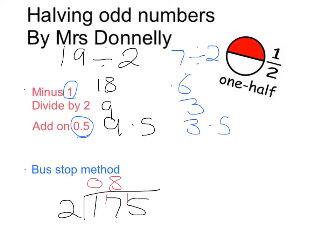and 1 left over. How many 2's go into 15? 7 times 2 is 14, got 1 left over. How many 2's go into 10? 5. So the answer is 87.5.